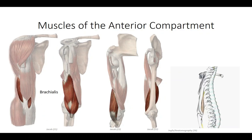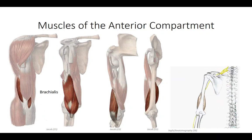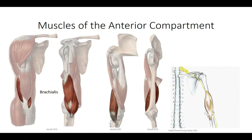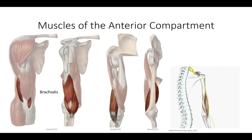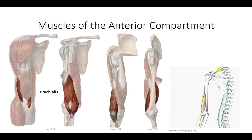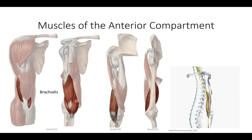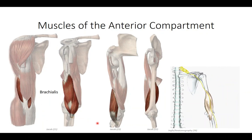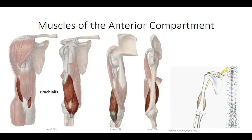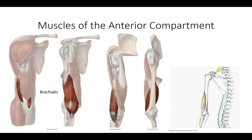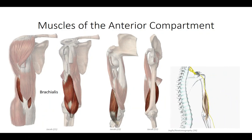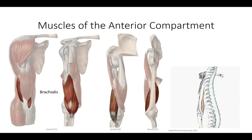Inferior to the coracobrachialis is the brachialis muscle. The muscle has a broad origin off the distal anterior shaft of the humerus and inserts on the proximal anterior shaft of the ulna. As it crosses anterior to the elbow joint, it contracts to flex the elbow, with equal strength in either pronation or supination.